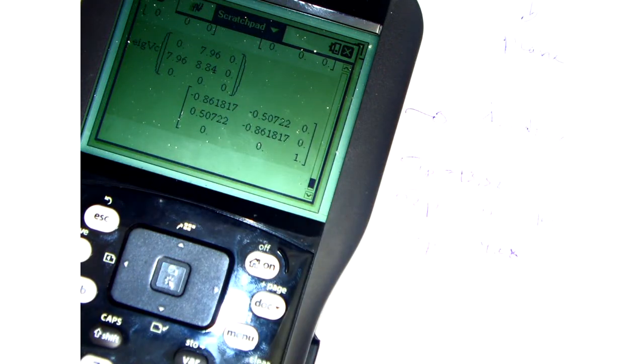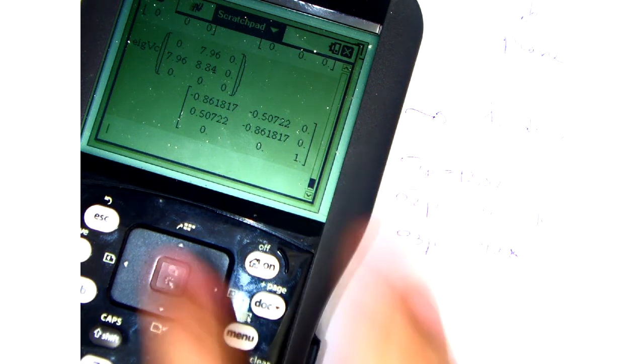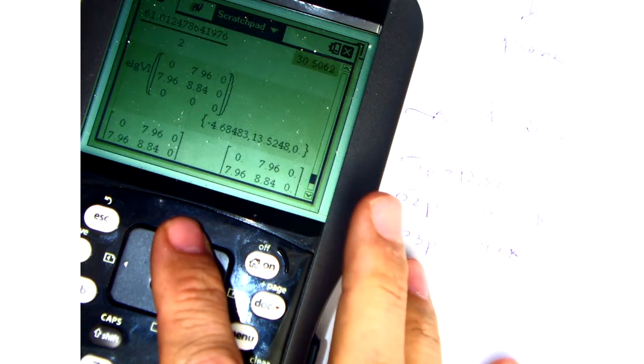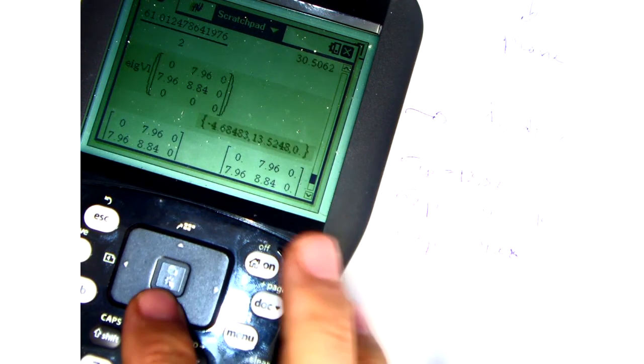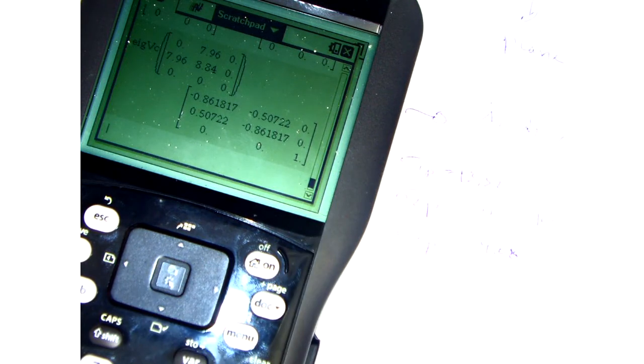The order, if you remember when we found the eigenvalues, the order that they appear, eigenvalues appear, the eigenvectors or associated eigenvectors appear in the same order. So first column, if I go see which one appeared first, eigenvalues, you see negative 4.68 appeared first. So the first vector corresponds to that. Second one is for the other one, the 13.52, and then the last one is for the third principal stress, which was along z-axis, sigma z.